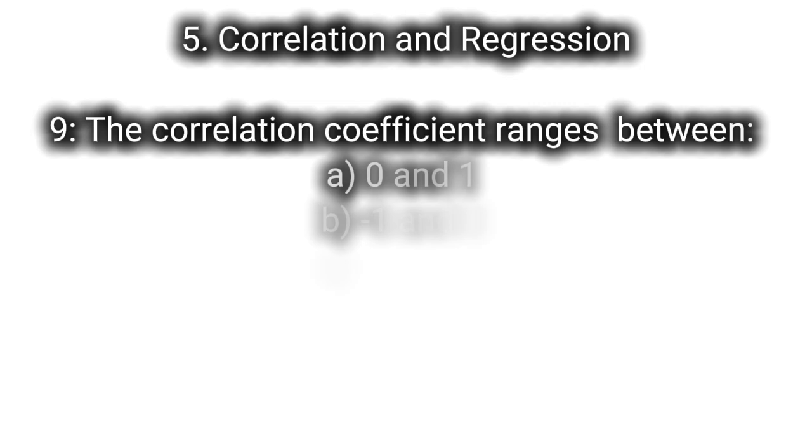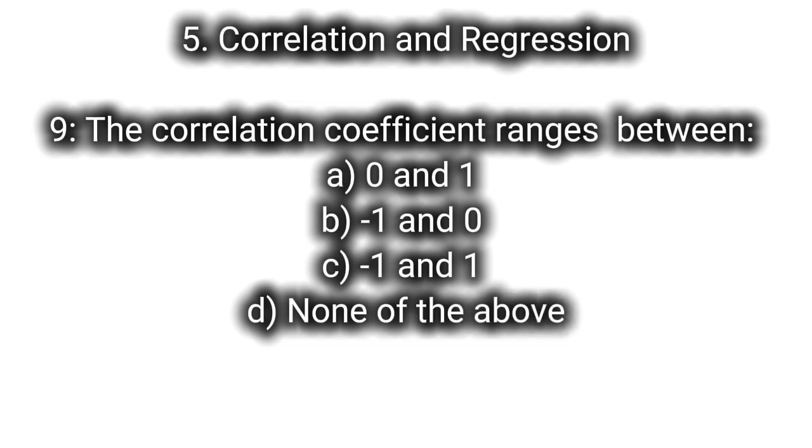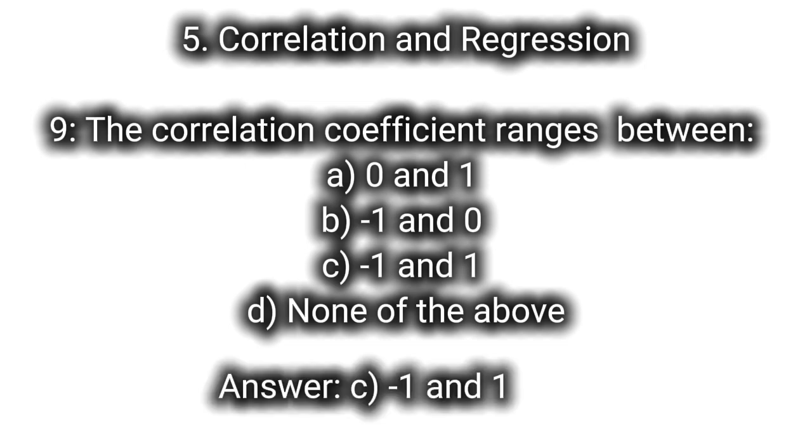5. Correlation and regression. Q9: The correlation coefficient ranges between A. Zero and one, B. Minus one and zero, C. Minus one and one, D. None of the above. Answer: C. Minus one and one.